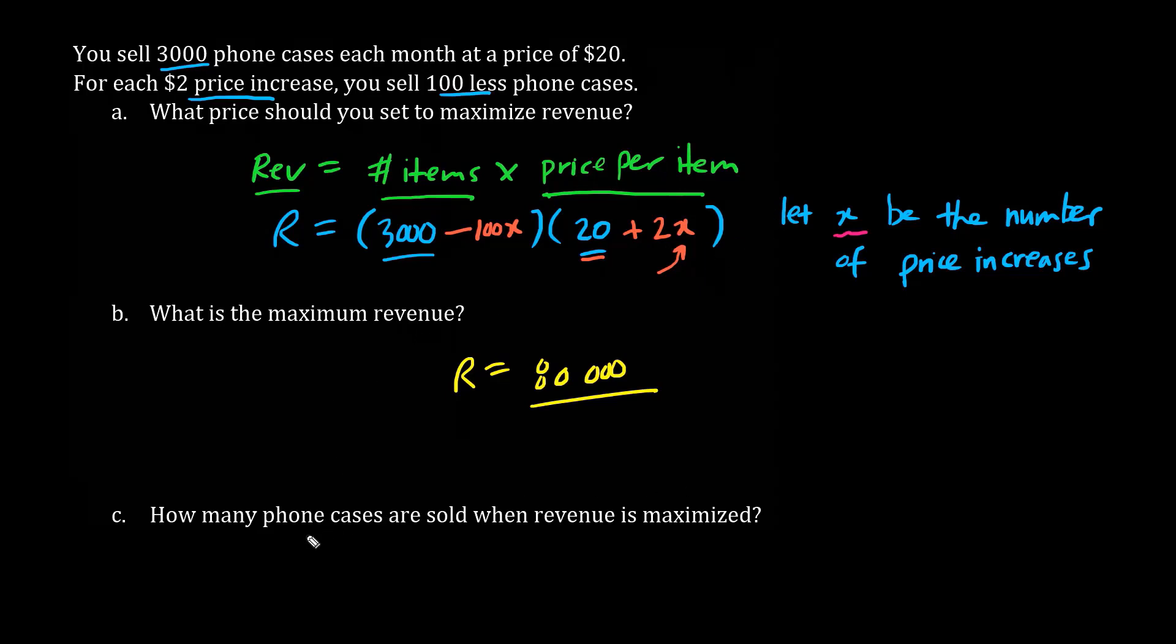Now, when finding out how many phone cases are sold, we previously thought the answer was x equals 10, but do not confuse this with the number of sales. Revenue equals number of items multiplied by the price per item. We're interested in the number of items, the number of sales, and it's not x.